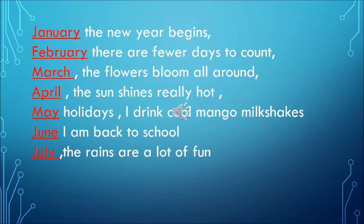March — the flowers bloom all around. April — the sun shines really hot. April — the sun shines really hot. May — holidays, I drink cool mango milkshakes. May — holidays, I drink cool mango milkshakes. June — I'm back to school. June — I'm back to school. July — the rain's a lot of fun. July — the rain's a lot of fun.